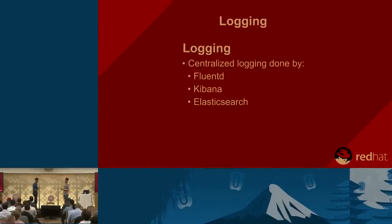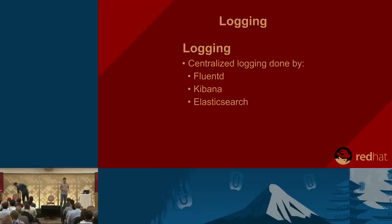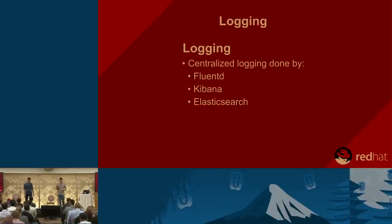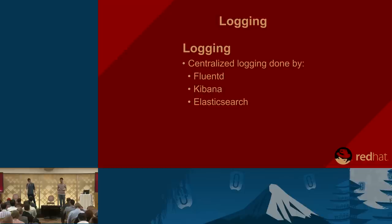Once OpenStack is deployed, the first thing you'll want is a centralized logging system. Centralized logging is currently a tech preview in OSP Director, but it was mandatory for some projects we worked on. Our recommendation is to use the Fluentd, Kibana, and Elasticsearch stack. Fluentd runs on each server, collects all logs, and sends them to Elasticsearch for storage. Kibana sits on top and provides a web interface with graphs, and lets you search logs for specific patterns — very useful when you need to debug quickly, for example when a VM is not spawning.